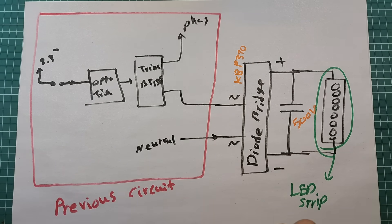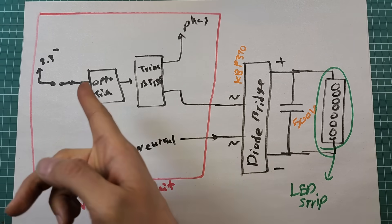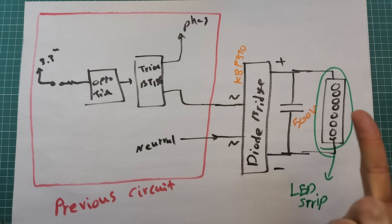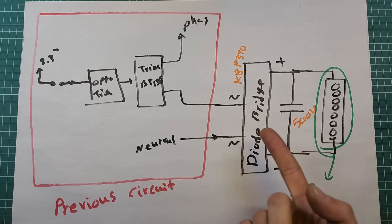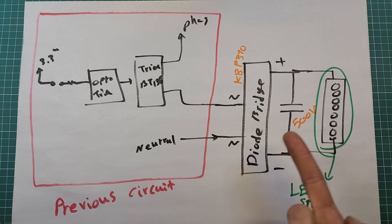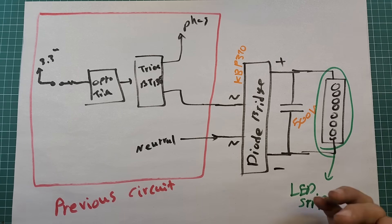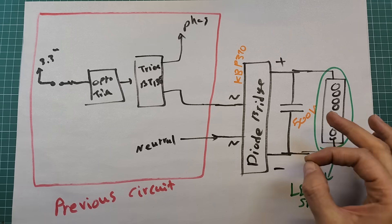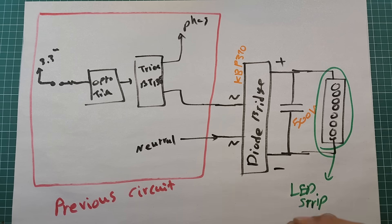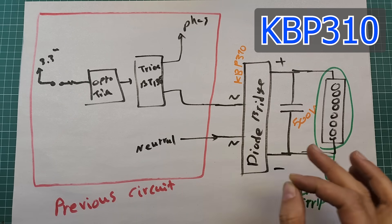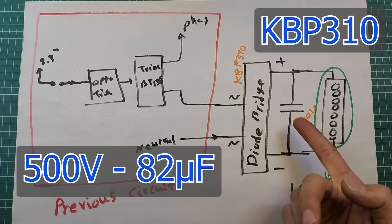To eliminate the flicker you have to eliminate the sinusoidal nature of the voltage — in other words, we need to convert the alternating voltage to direct voltage. The good news is there is a very simple way to do that: using a diode bridge and a filter capacitor. We place a diode bridge after the triac and connect the output to a filter capacitor to convert the output into a smooth, clean DC voltage, eliminating or greatly reducing flicker. I'm using a KBP310 diode bridge and a 500-volt 82-microfarad capacitor as the filter.